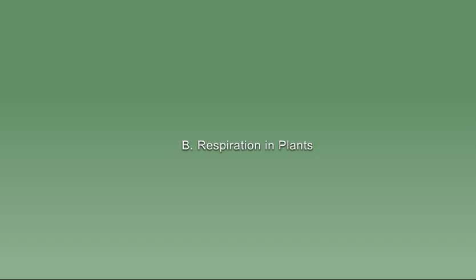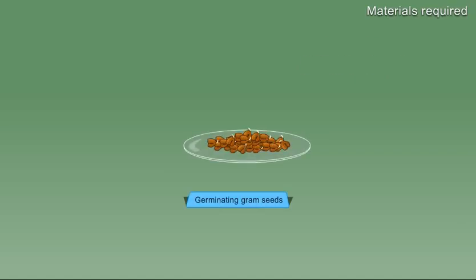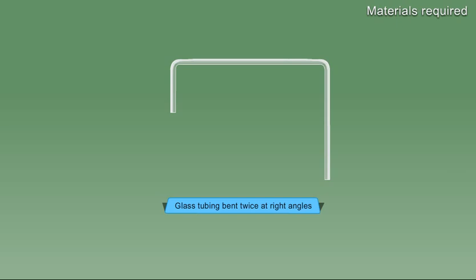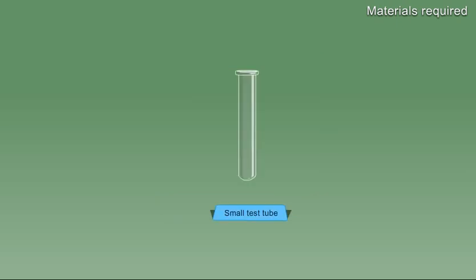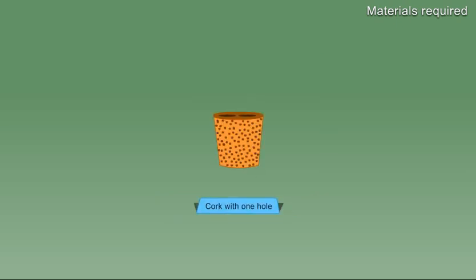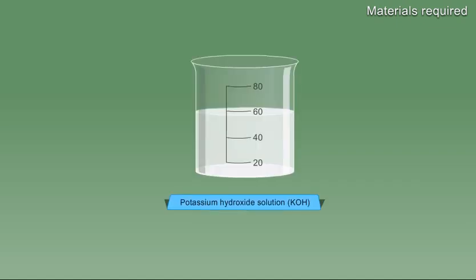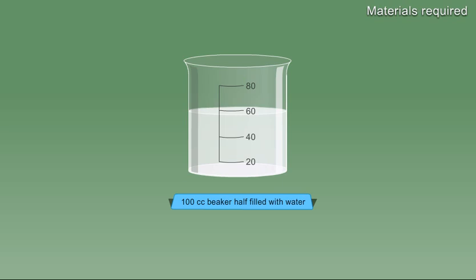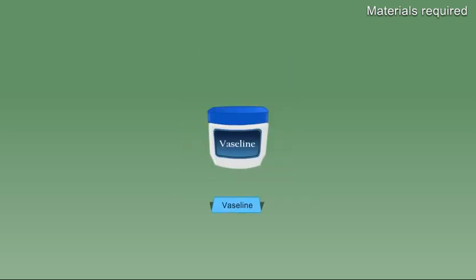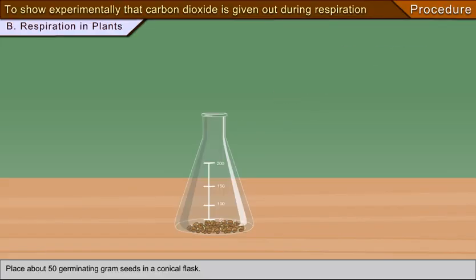Respiration in plants. Materials required: germinating gram seeds, dropper, conical flask, cotton thread, glass tubing bent twice at right angles, small test tube, cork with one hole, potassium hydroxide solution, 100cc beaker half filled with water, vaseline. Procedure: Place about 50 germinating gram seeds in a conical flask.